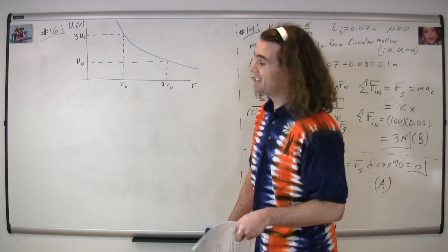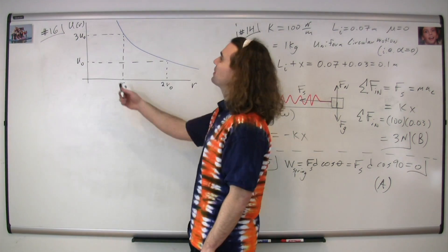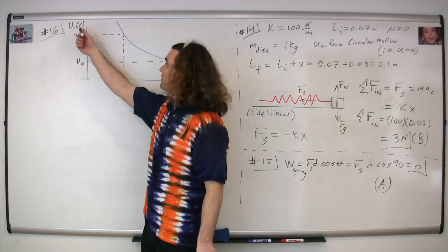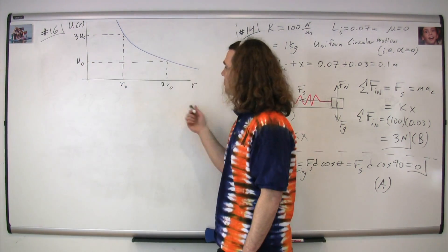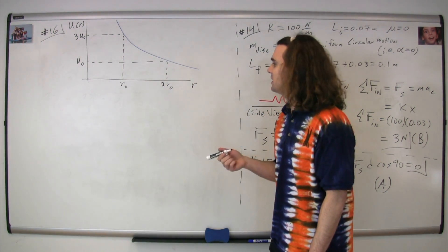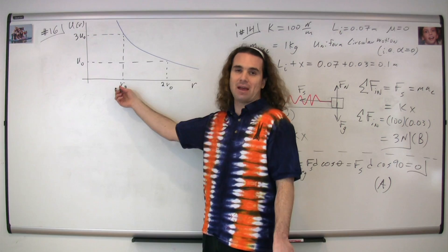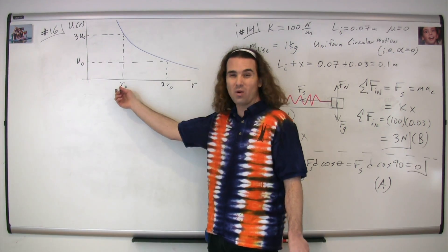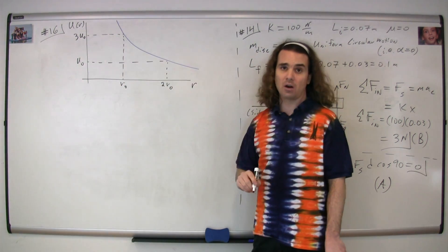Question 16, we are given the potential energy curve, that is, the potential energy with respect to position for an object of mass m. They ask if the object is released at rest at position r-naught, what is its speed at two r-naught?